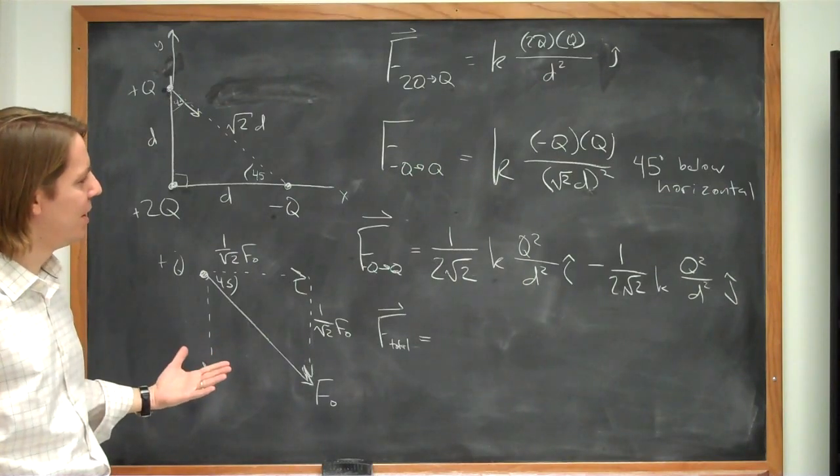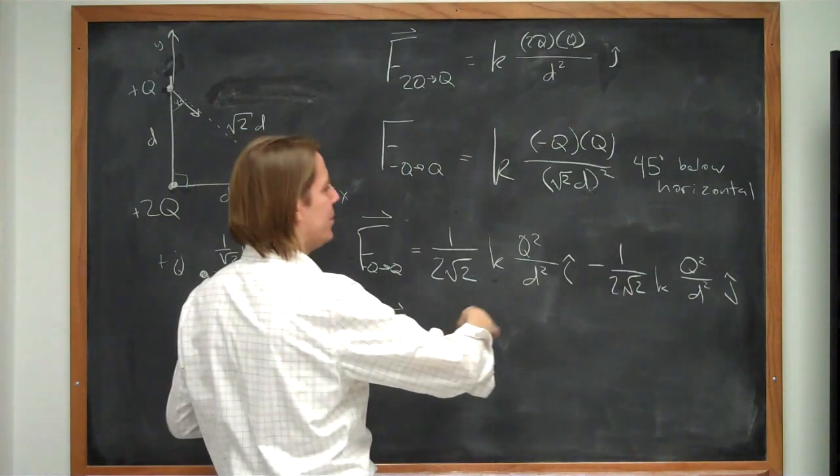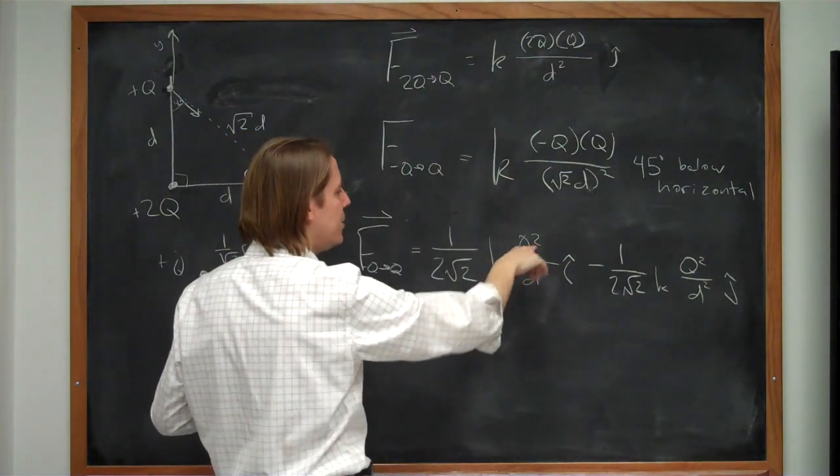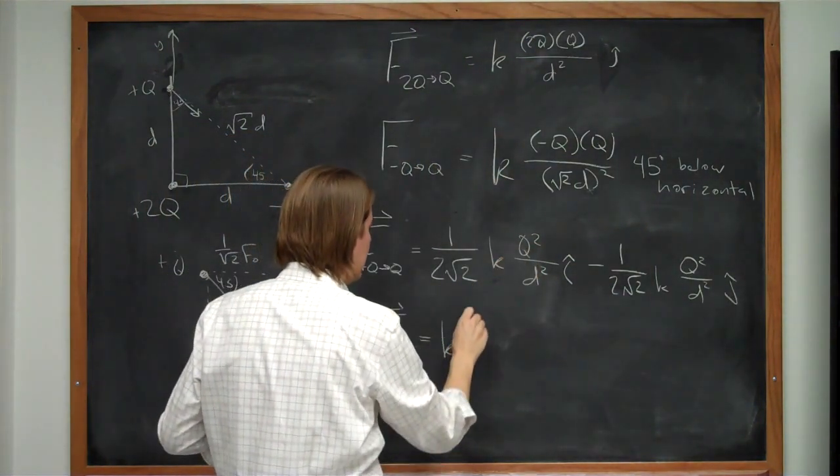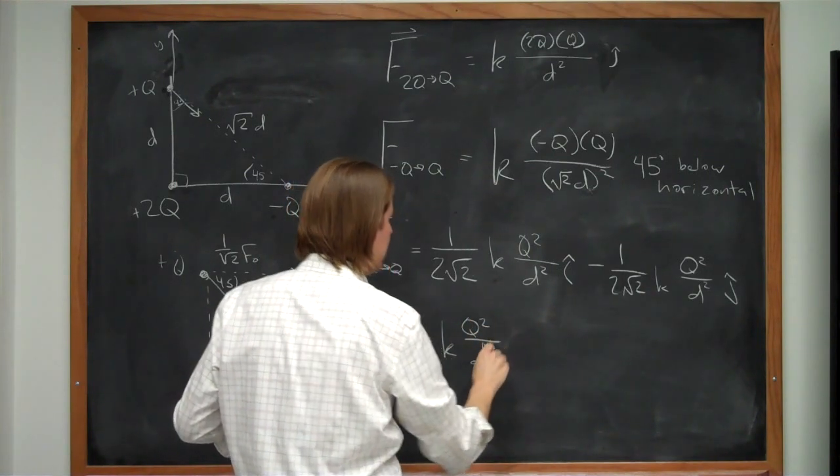And to get the answer just like the book. We want to get the exact same answer the book got. What we would do is pull out the common terms. So the things that all these share in common are kq squared over d squared.